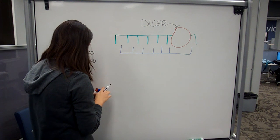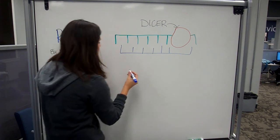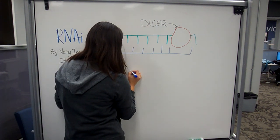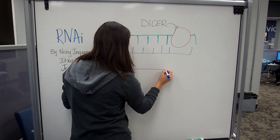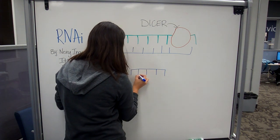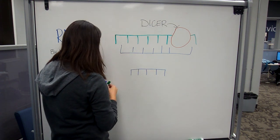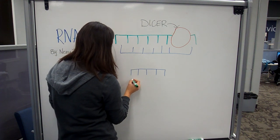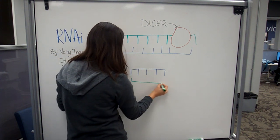The sense strand of the siRNA duplex is then degraded in the cytoplasm, and the antisense strand is incorporated into the RISC complex.